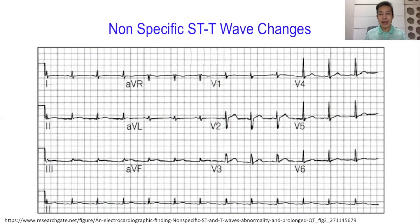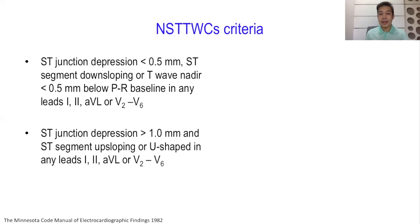Nonspecific ST-T wave changes are one of the more common interpretations we see in ECG readings. The changes in the ST segment and T waves are deemed nonspecific because they don't fit into any of the other criteria, like the criteria for ischemia, strain pattern, or even the effects of drugs or metabolic abnormalities in the patient. However, there are in fact criteria wherein we read nonspecific ST-T wave change.